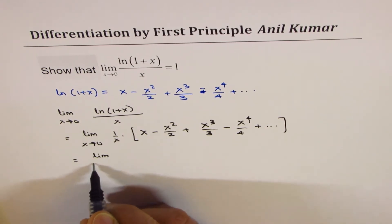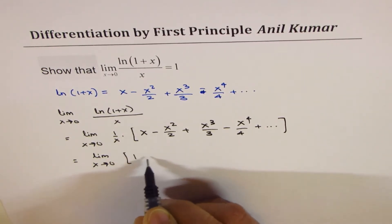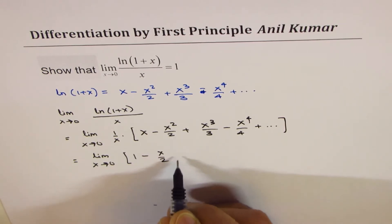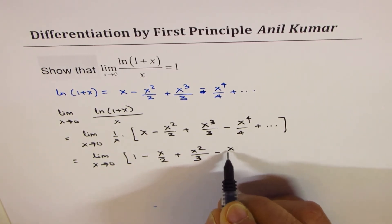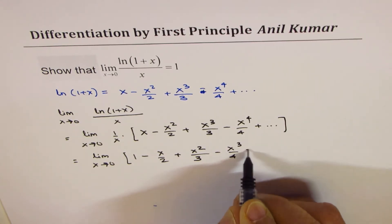You get limit x approaches 0 of 1 minus x over 2 plus x squared over 3 minus x cubed over 4 plus so on.